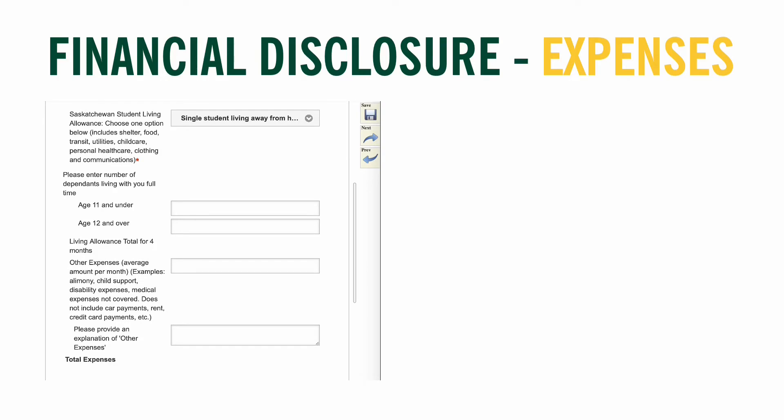List the number of dependents living with you if you indicated that you have children. Include any other expenses such as alimony, child support, disability expenses, or medical expenses not covered. Do not include car payments, rent, or credit cards. Include an explanation if possible for any other expenses listed. For this example, I left all of these blank as they do not pertain to my current situation.